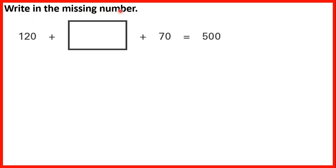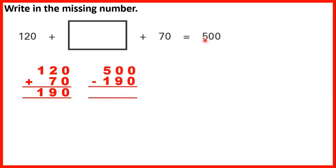Write in the missing number. 120 plus something plus 70 equals 500. So first let's find the total of 120 plus 70. That's 190. So what do we need to add to 190 to make 500? Well to work that out what we can do is subtract 190. So subtract the total of what we know from 500, so from our answer. Because when we have a missing number addition we can use subtraction to find our missing number. And 500 minus 190 is 310. So that's our missing number. And then we can check 120 plus 310 plus 70 is 500.